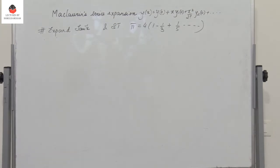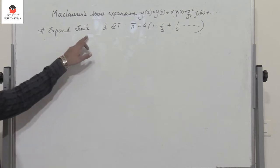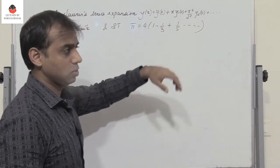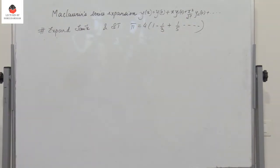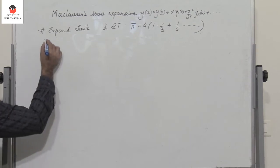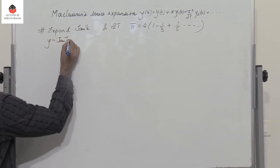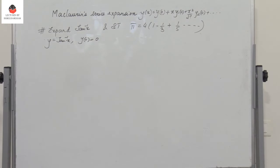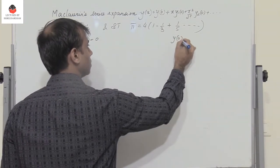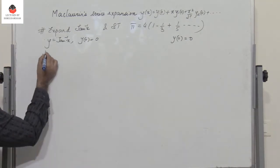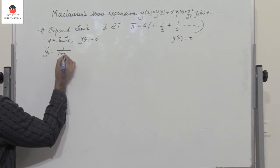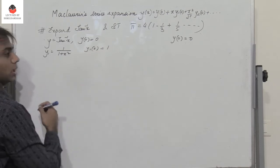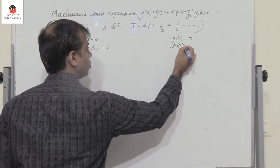Now for a very interesting problem: expand tan⁻¹x in ascending powers of x and show that π = 4(1 − 1/3 + 1/5 − ...). So y = tan⁻¹x. Therefore y(0) = tan⁻¹(0) = 0. And y₁ = 1/(1 + x²), so y₁(0) = 1.